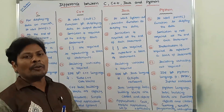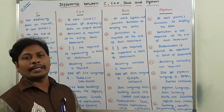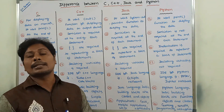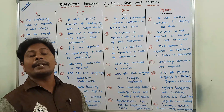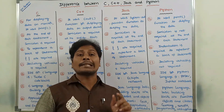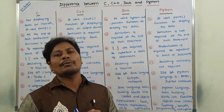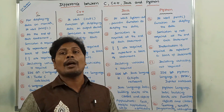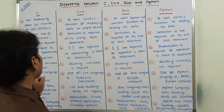In C language, a semicolon is required at the end of each statement. In C++ language, a semicolon is also required at the end of each statement. In Java language, a semicolon is required at the end of each statement. But in Python language, a semicolon is not required at the end of each statement. So among all the languages, semicolon is required in C, C++ and Java, but not in Python.